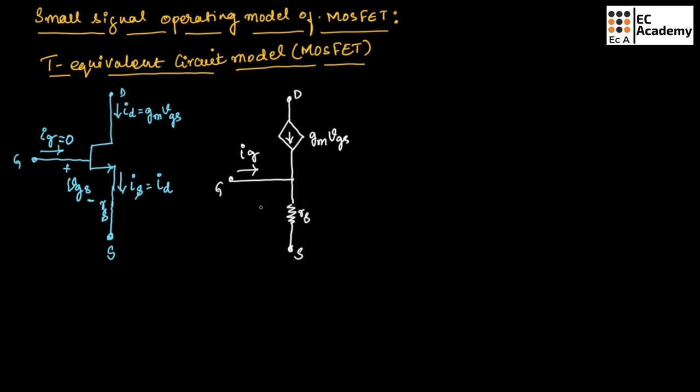The voltage between gate and source is VGS. Current across the drain terminal is ID. The same current flows through the source terminal as well, so current across the source terminal also equals ID.